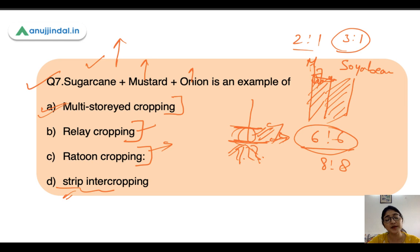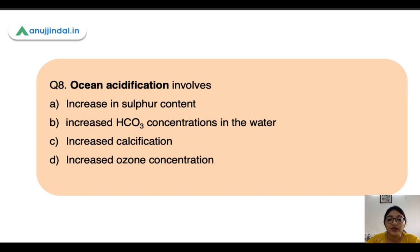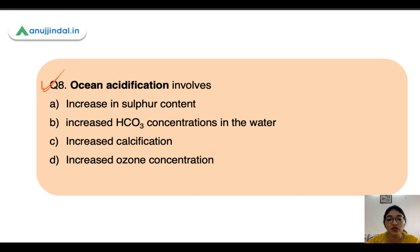In any cropping system, you should know all of these definitions thoroughly. The next question: ocean acidification involves what in water — increase in sulfur content, increase in bicarbonate concentration, increased calcification, or increased ozone concentration?